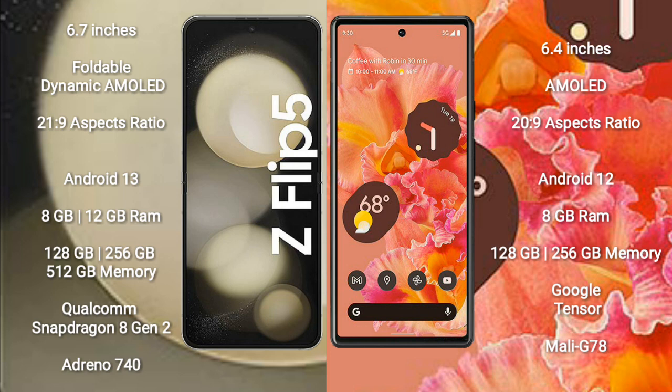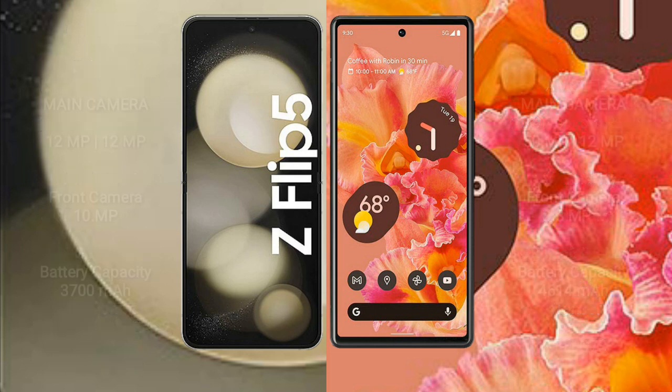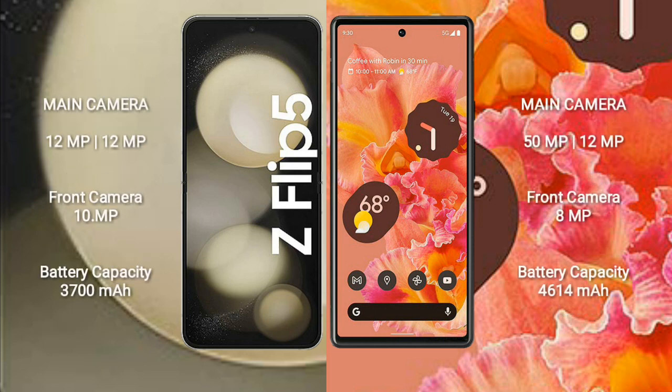Google Pixel 6 comes with 8GB RAM and 128GB or 256GB internal storage, Google Tensor processor, and GPU Mali-G78.